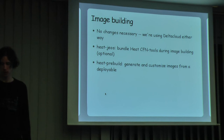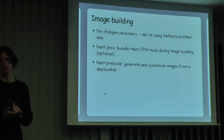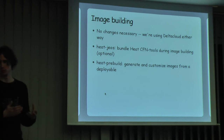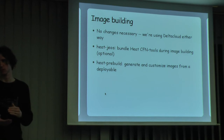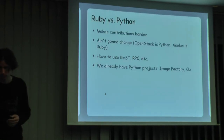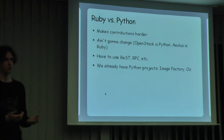HEAT is in Python, iOS/Conductor is in Ruby, and that's not going to change. One thing that will probably slow things down is that we can't call Python code directly from Ruby and vice versa. So we're going to have to use some sort of API - either RPC, which is what OpenStack projects use internally, or some REST API to talk to the other side. We're doing that already with Image Factory.